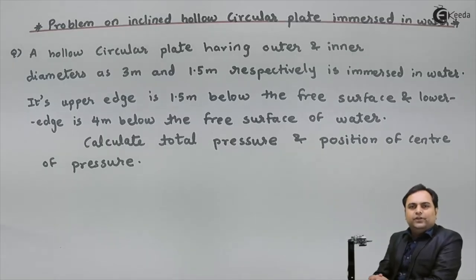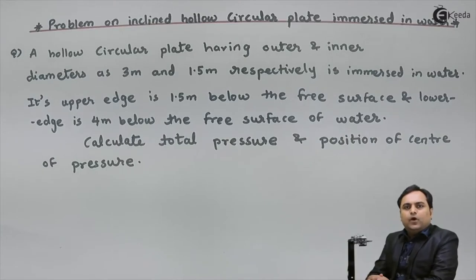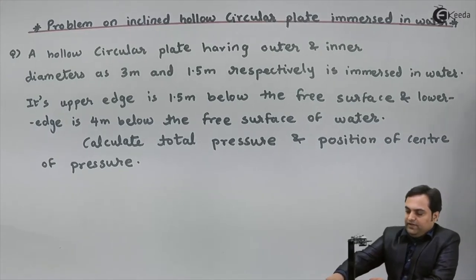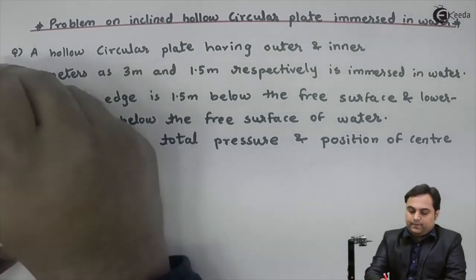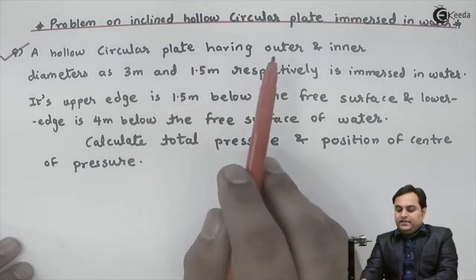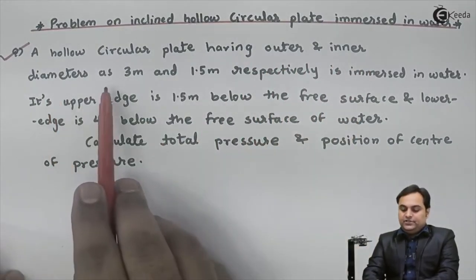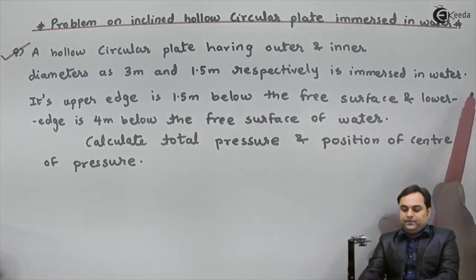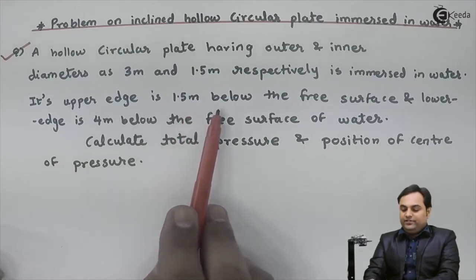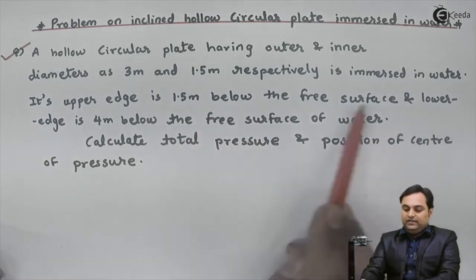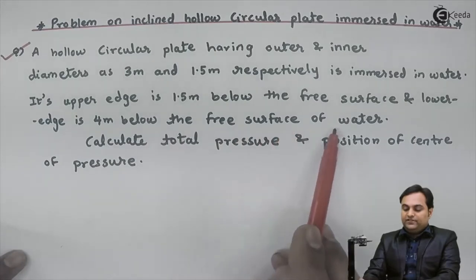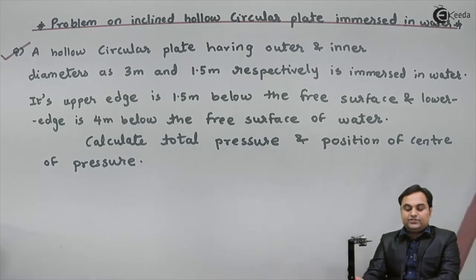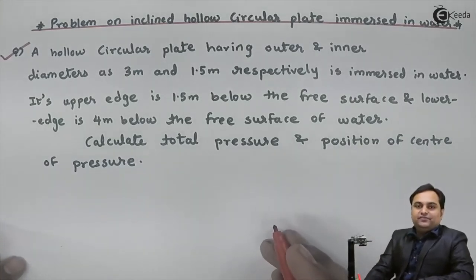Hello friends, in this video we will see a problem of an inclined hollow circular plate which is submerged in water. A hollow circular plate having outer and inner diameters of 3 meters and 1.5 meters respectively is submerged in water. Its upper edge is 1.5 meters below the free surface and the lower edge is 4 meters below the free surface. Calculate the total pressure and position of the center of pressure.